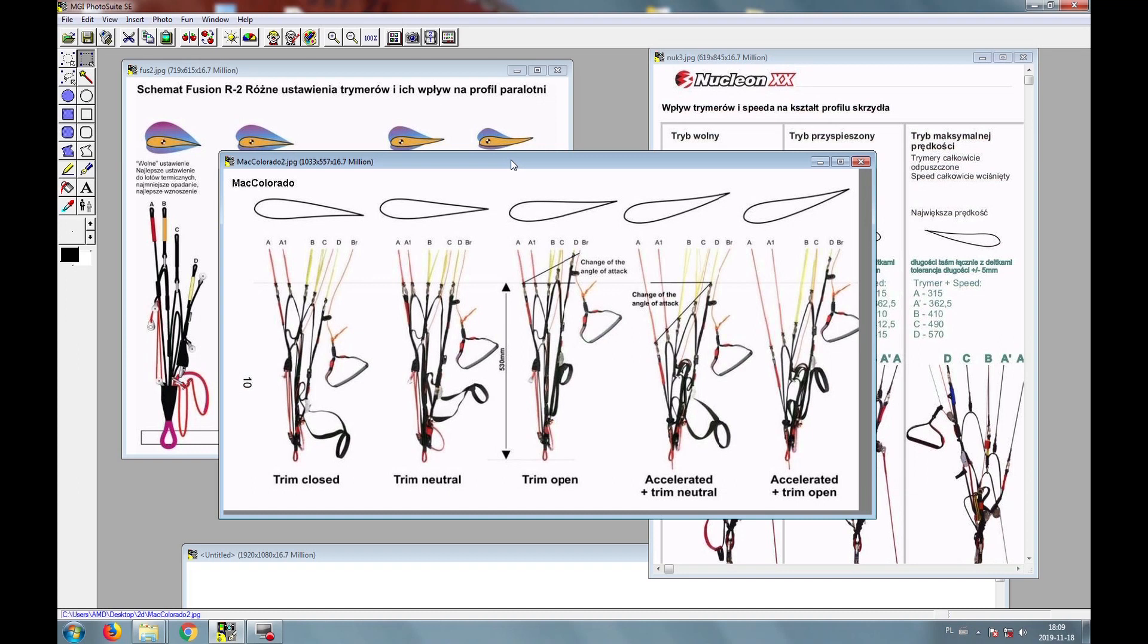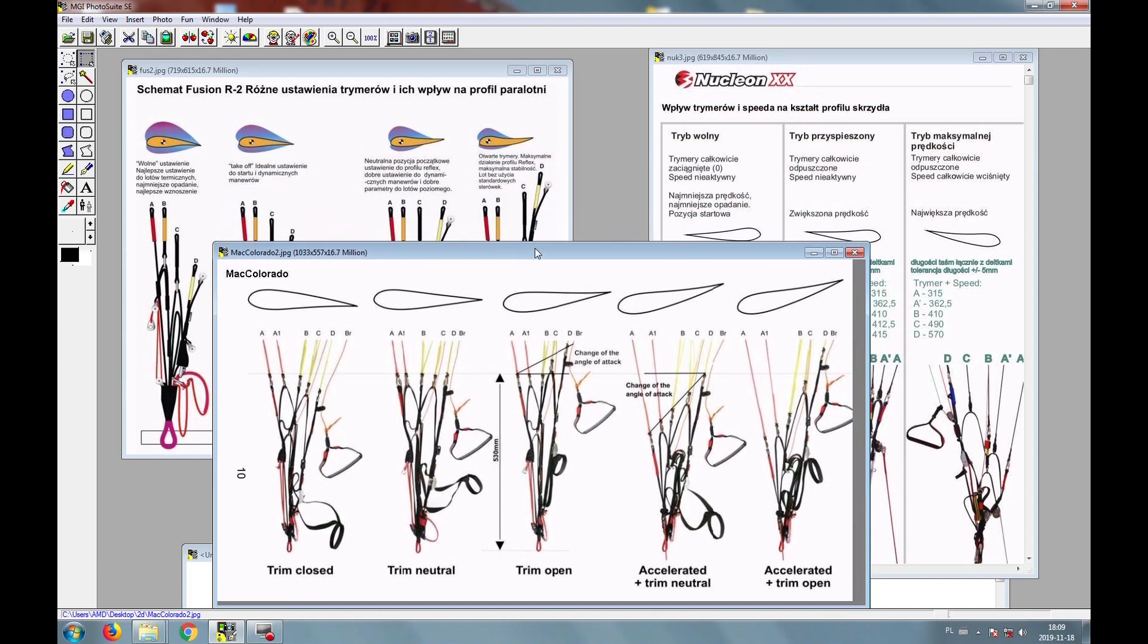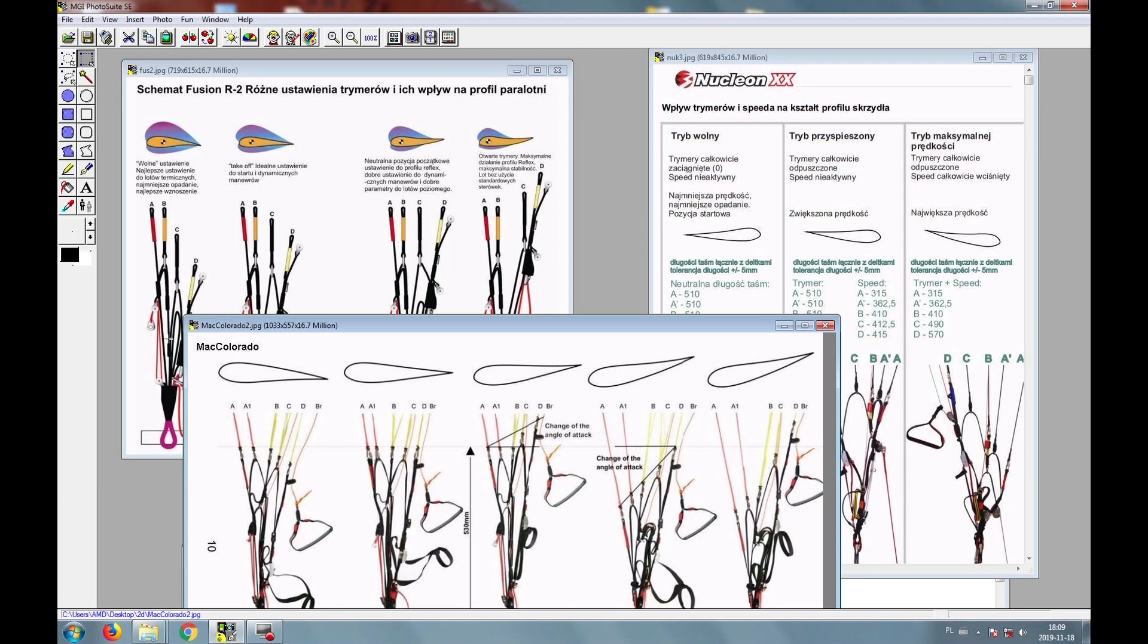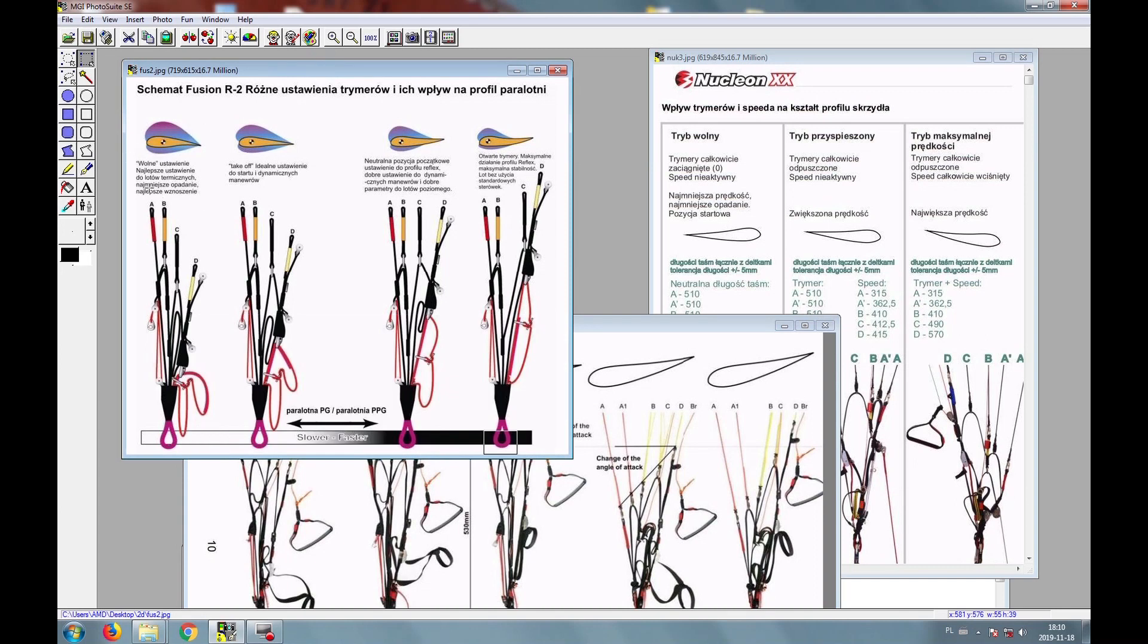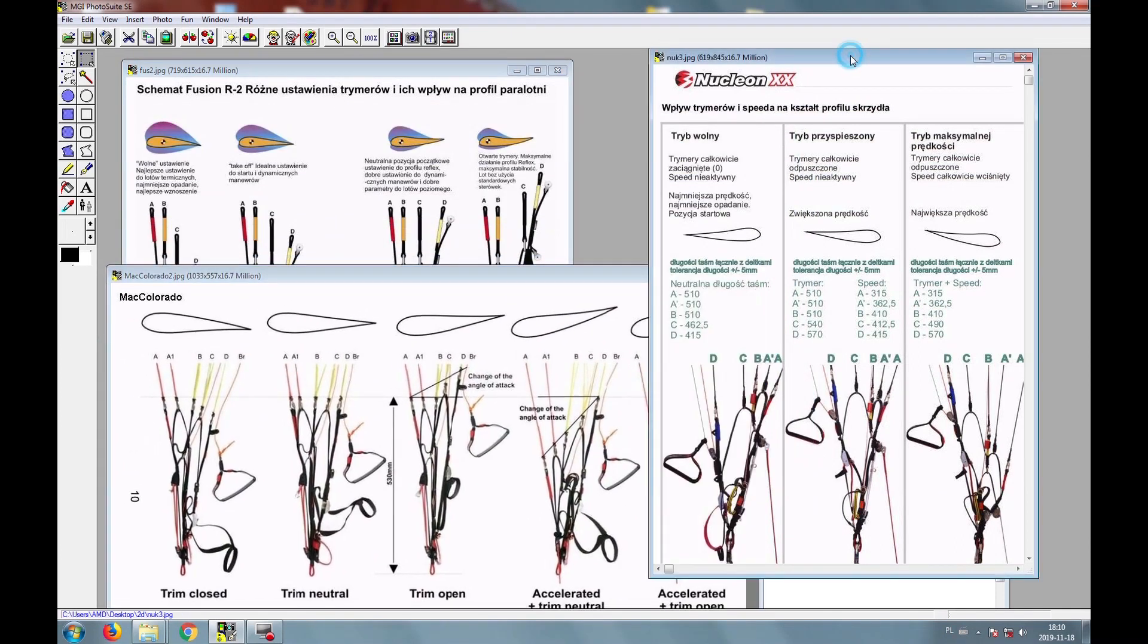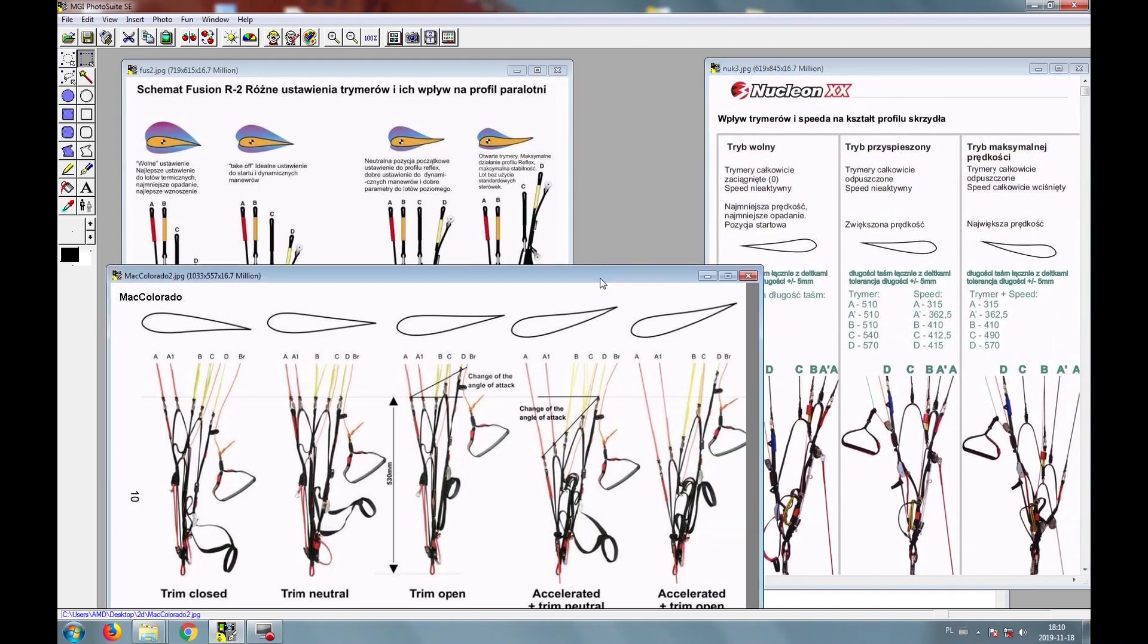All those three examples work by changing the attack angle of the canopy. As you can see, in all those three examples you can shift the angle of attack by trims, by trimmers. On the example of Fusion, we pull down the trims from the position of takeoff to the position of trim speed to the position fast. The profile is changed upside down, so the glider doesn't go up so much, and if it has a reflex profile it starts to work. We can see that on all of the three example canopies.